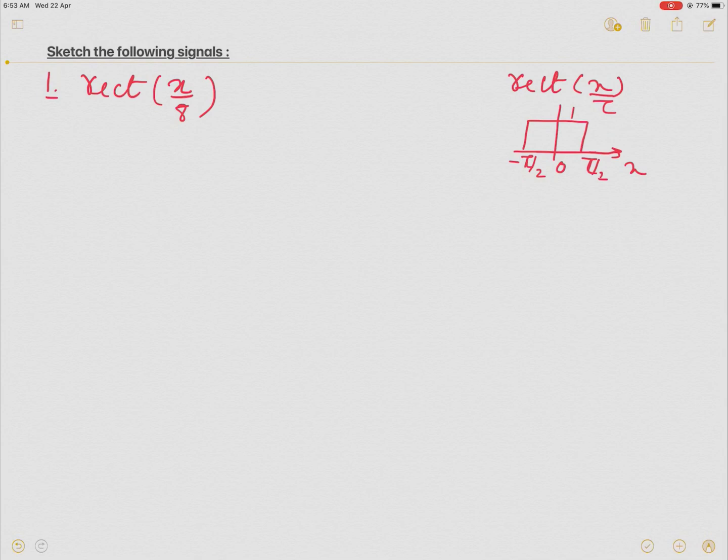Similarly, so we know this signal. Here tau is 8, so it will be 8 by 2 to minus 8 by 2, and this is 4 to minus 4. This is the x-axis.